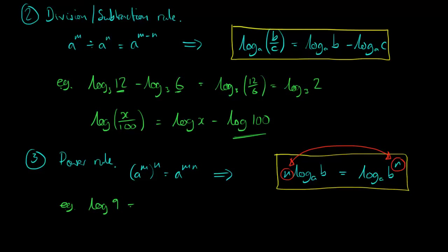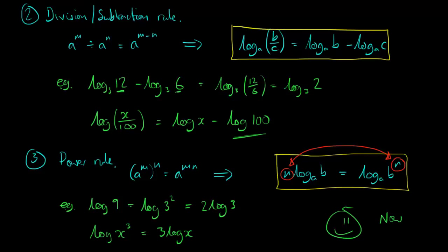Or we can take a number in front and bring it inside. For example, the logarithm of 9 can be written as log of 3 squared, and then we take the 2 out to the front using the power rule to get 2 log 3. Another example: the log of x cubed — the power 3 can simply be brought out to the front to write 3 times the log of x. So those are the three rules. Let's now put them into action.